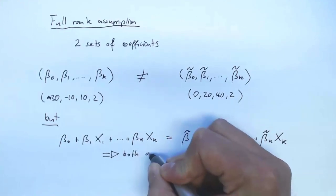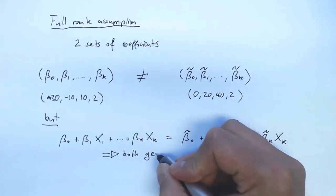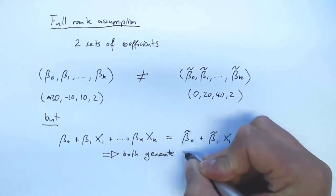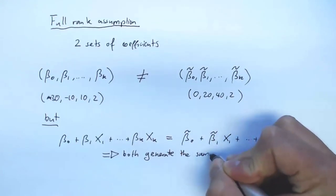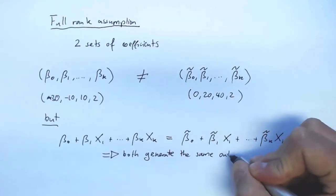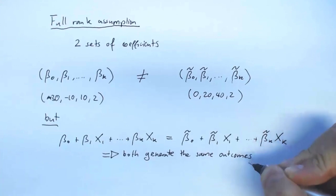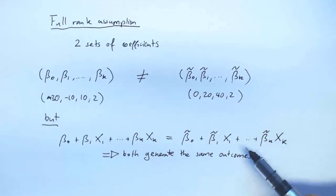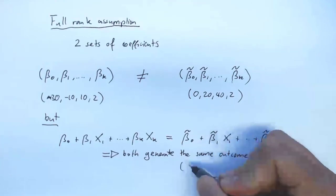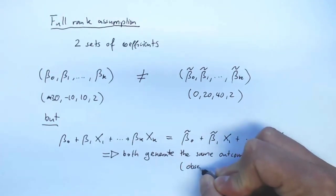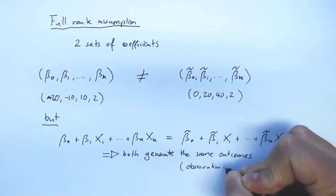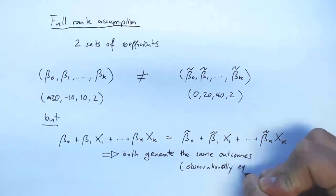Both sets of coefficients generate the same outcomes. So just by looking at observed x's and observed outcomes, I wouldn't see a difference between those two sets of coefficients. So we say they are observationally equivalent.